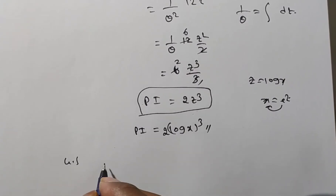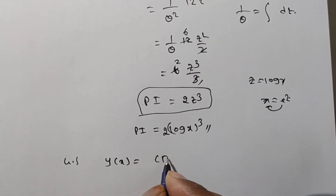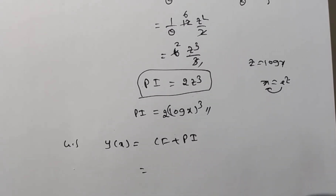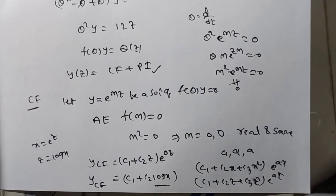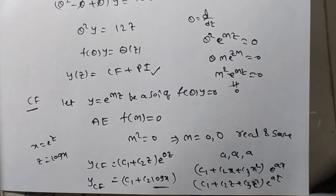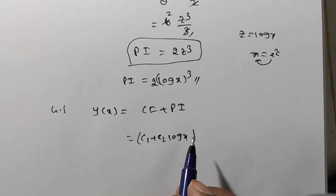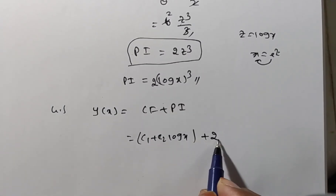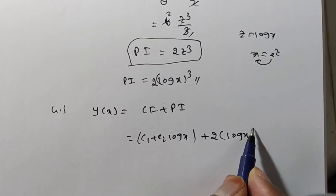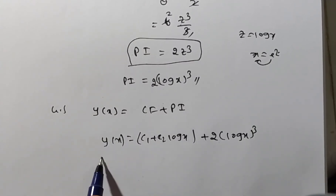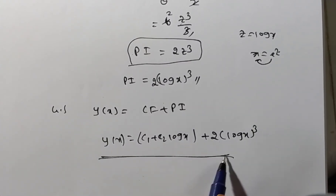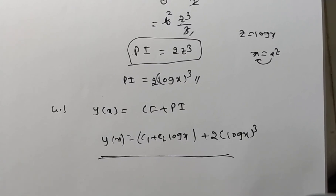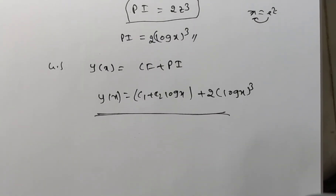The general solution is y(x) = complementary function + particular integral = c₁ + c₂·log(x) + 2(log x)³. This is the final general solution of the given differential equation.